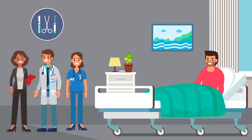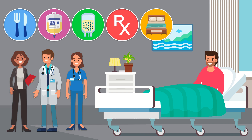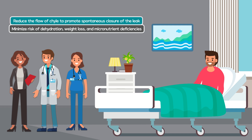In order to prevent these complications, a chyle leak must be met with swift action by the interdisciplinary team. While surgical repair of the lymphatic system is sometimes necessary, a chyle leak can frequently be treated with a modified diet or enteral feeds, parenteral nutrition, medication, and/or bed rest. Thus, a chyle leak presents the dietitian with an opportunity to play a crucial role. With nutritional management, the goal is to reduce the flow of chyle to promote spontaneous closure of the leak and minimize risk of dehydration, weight loss, and micronutrient deficiencies.